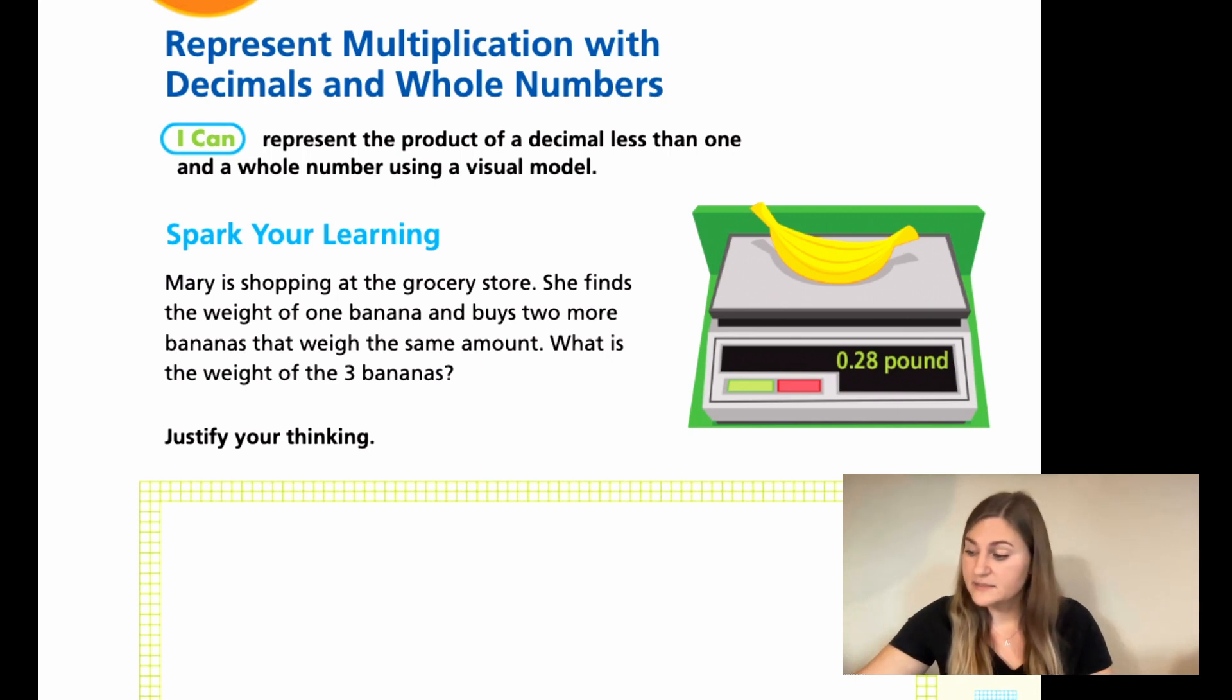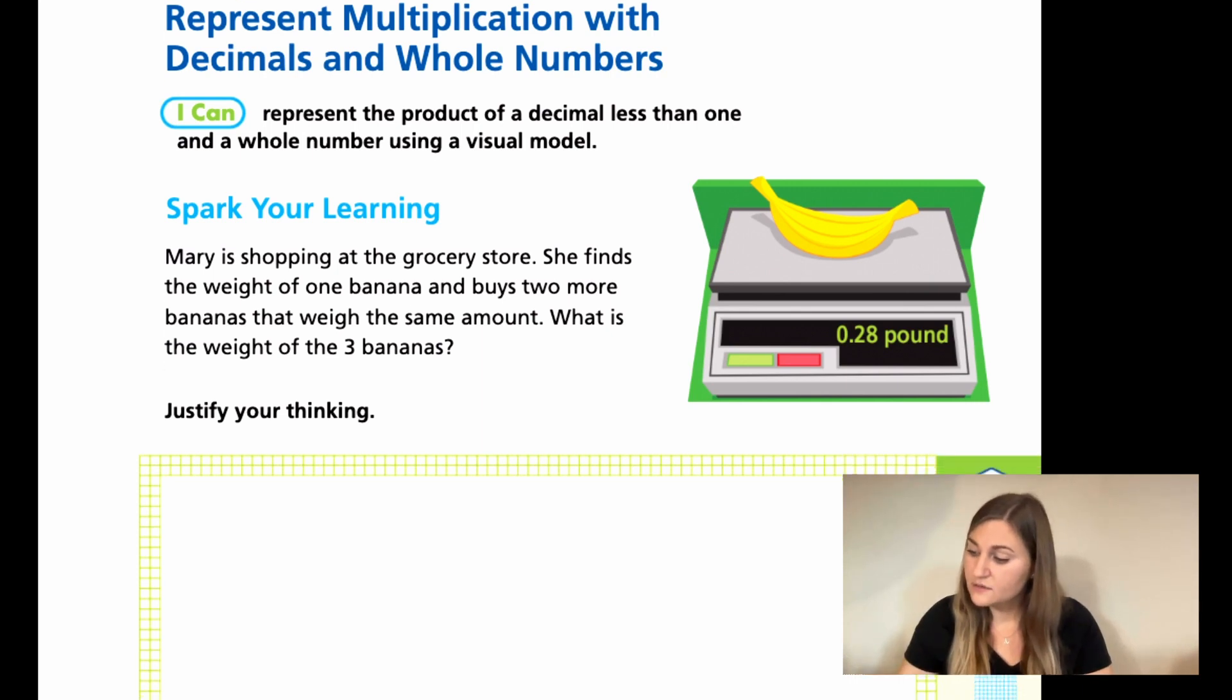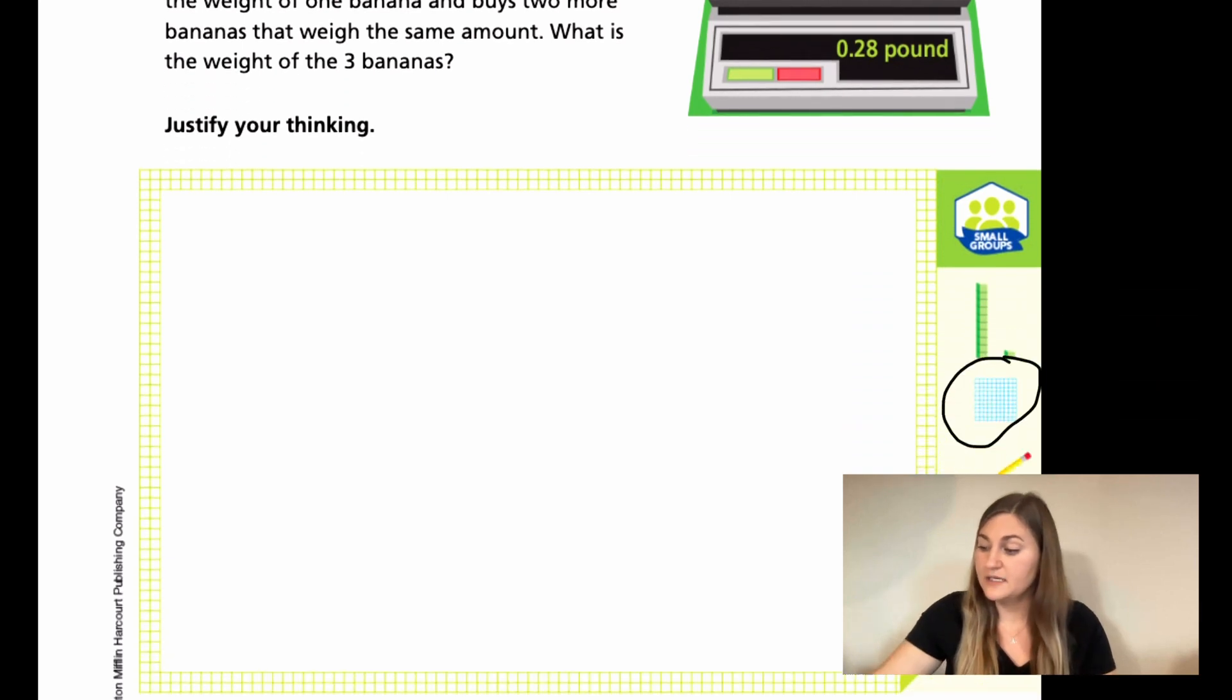So for this, if you see this little grid right here, it's showing that we need a grid of 100. That's because the 8 in 0.28 is in the hundredths place. So we do need to draw a giant grid of 100 that's 10 by 10.